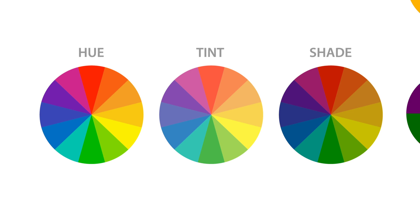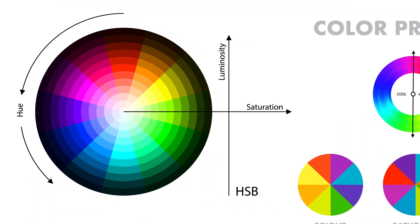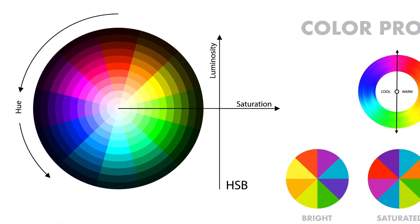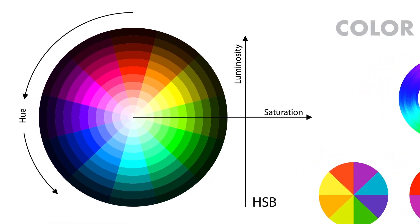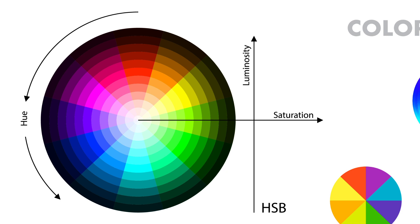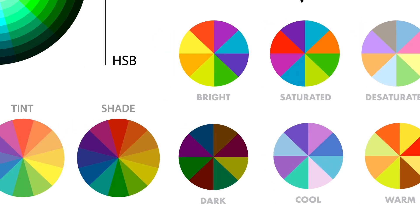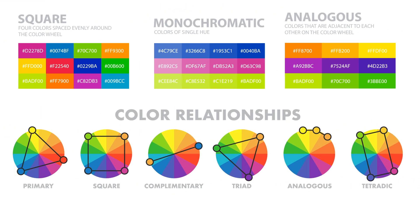A tint is a hue to which white has been added — for example, red plus white equals pink. A shade is a hue to which black has been added. Finally, a tone is a color to which black and white, or gray, have been added. This darkens the original hue while making the color appear more subtle and less intense.